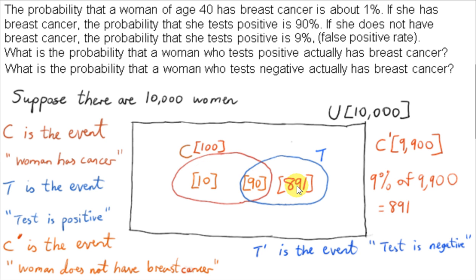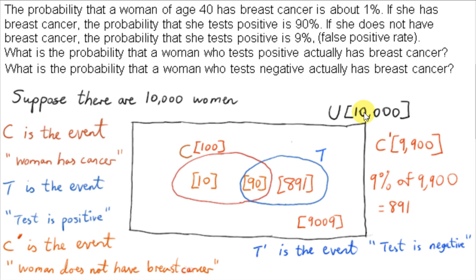There are 4 regions altogether in this Venn diagram, and the 4 numbers must add up to 10,000. If you add up these 3 numbers and take the result from 10,000, you get 9,009 women who do not have cancer and do not test positive.